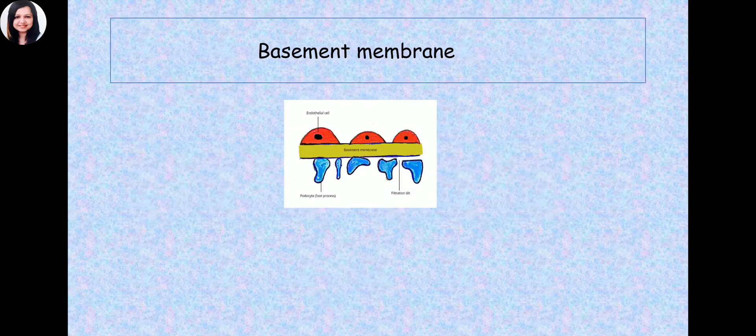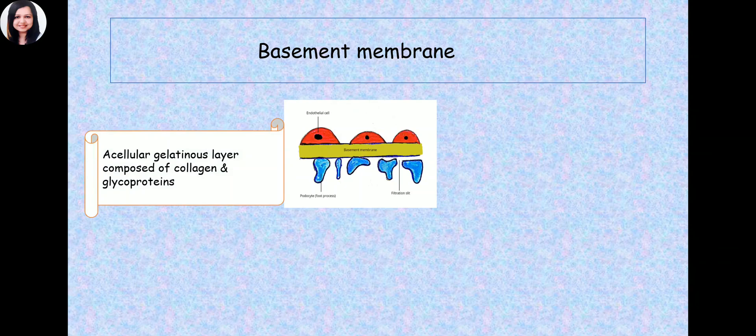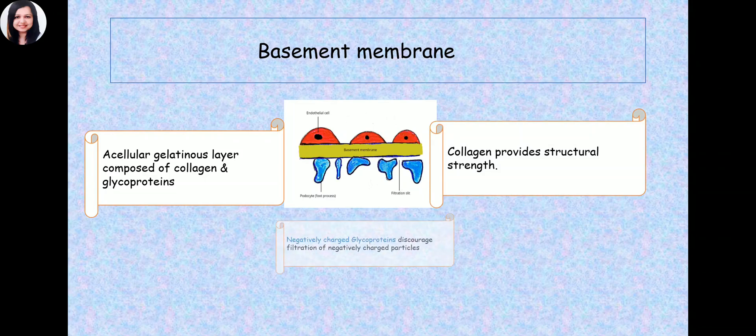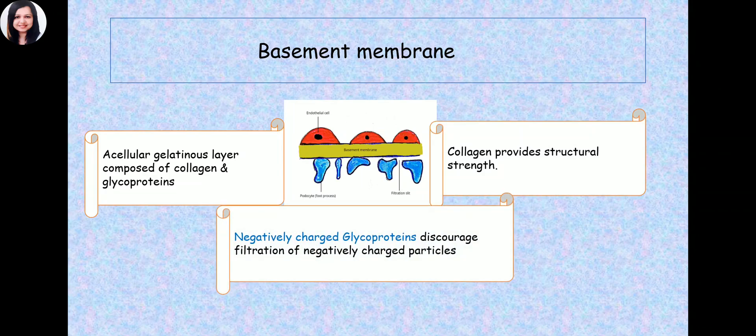The second layer is the basement membrane — an acellular gelatinous layer composed of collagen and glycoproteins. Collagen provides structural strength, and the negatively charged glycoproteins (sialoprotein) discourage filtration of negatively charged particles. Particles less than 4 nanometers are freely filtered across the glomerular membrane; 4 to 8 nanometers may or may not pass depending on their charge; and particles more than 8 nanometers will not be filtered at all.